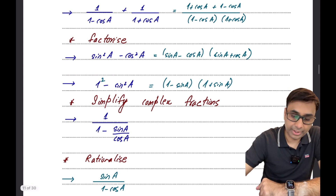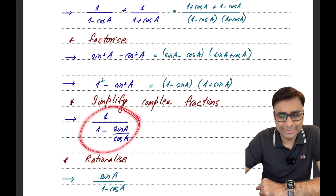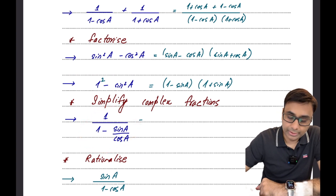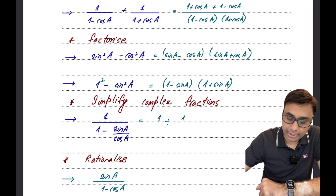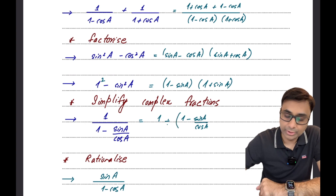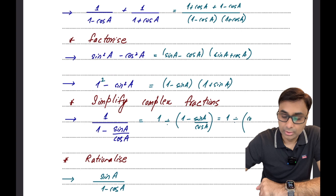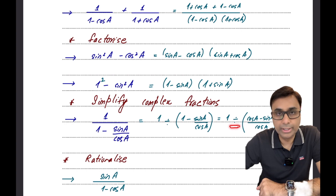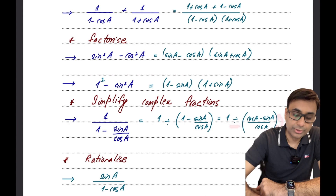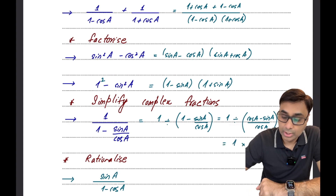If you have complex fractions that need to be simplified, it can get confusing. In that case I would suggest you write the divisibility as a division sign and then write (1 - sin a) / cos a. So this is going to be 1 divided by — taking the LCM — this fraction becomes (cos a - sin a) / cos a. When I change the division sign into multiplication, the fraction gets flipped, so this becomes 1 × cos a / (cos a - sin a).